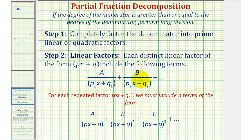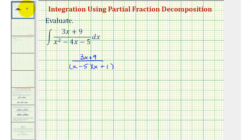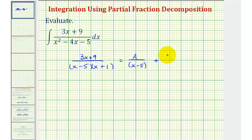And if we had repeated linear factors, we would follow this pattern here. So going back to our example, this is going to be equal to some constant A divided by the first linear factor of x minus five, plus some constant B divided by the second linear factor of x plus one.